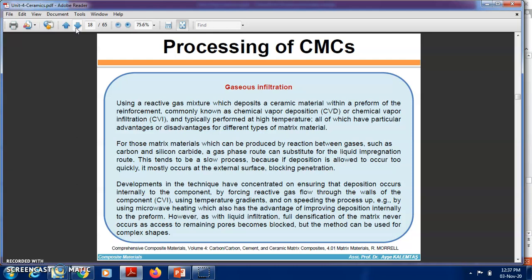This tends to be a slow process because if deposition is allowed to occur too quickly, it mostly occurs at the external surface, blocking penetration. Developments in the technique have concentrated on ensuring that deposition occurs internally to the component by forcing reactive gas flow through the walls of the component using a temperature gradient, and on speeding the process up, for example by using microwave heating, which also has the advantage of improving deposition internally to the preform.